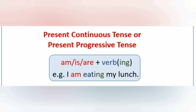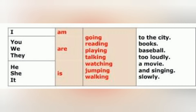Now let's move on to present progressive tense. The rule is: am / is / are + verb + ing. For example, with 'I' we always use 'am.' 'I am going to the city.' Go is the verb, we add -ing — going.